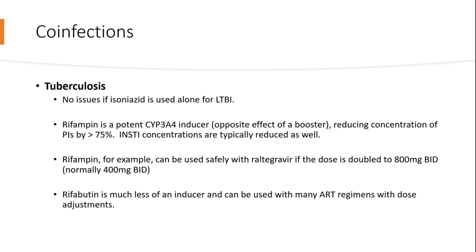For tuberculosis co-infection, there are no issues if isoniazid is used alone for latent TB. However, rifampin, our preferred rifamycin, is a potent CYP3A4 inducer — essentially the opposite effect of a booster — and can reduce protease inhibitor concentrations by over 75%. Integrase inhibitor concentrations are also often reduced. One approach with raltegravir is to double the dose to 800 mg BID from the normal 400 mg. Rifabutin is much less of an inducer and provides much more flexibility, though dose adjustments should still be kept in mind.